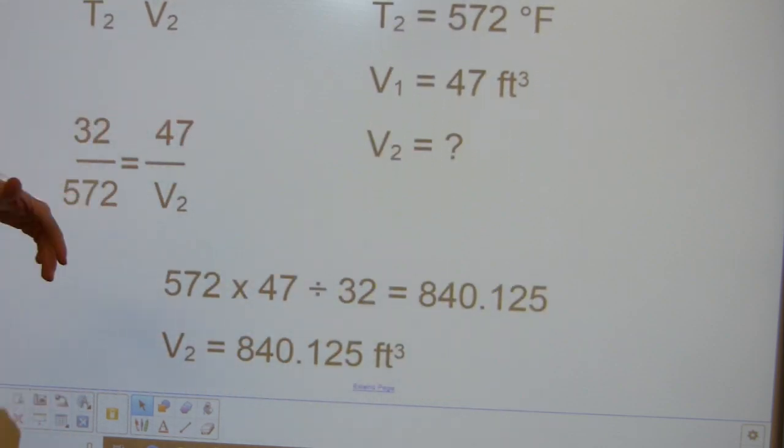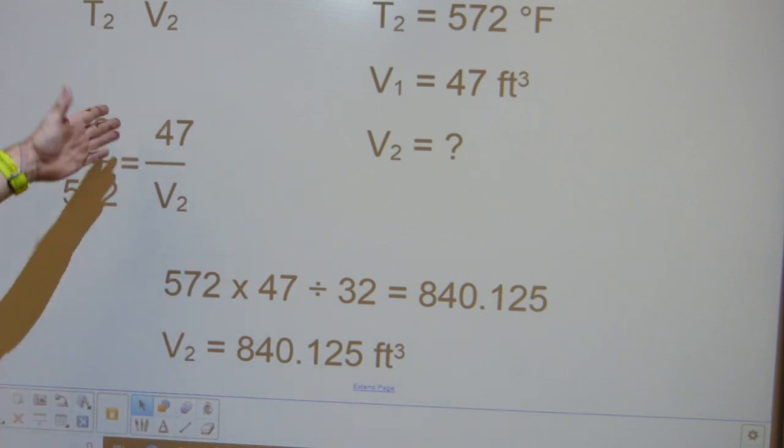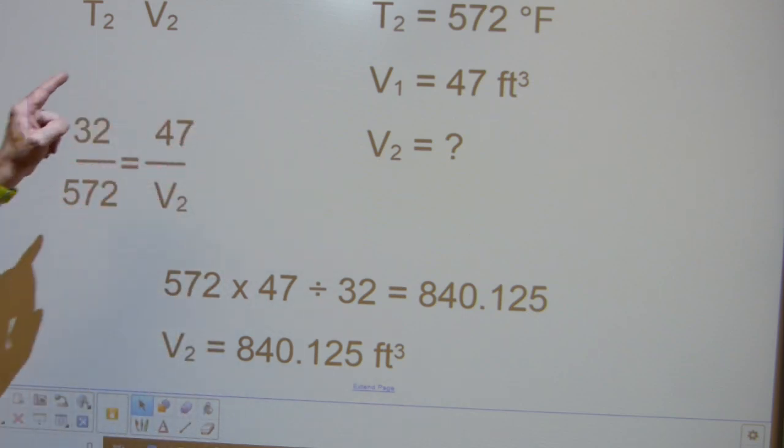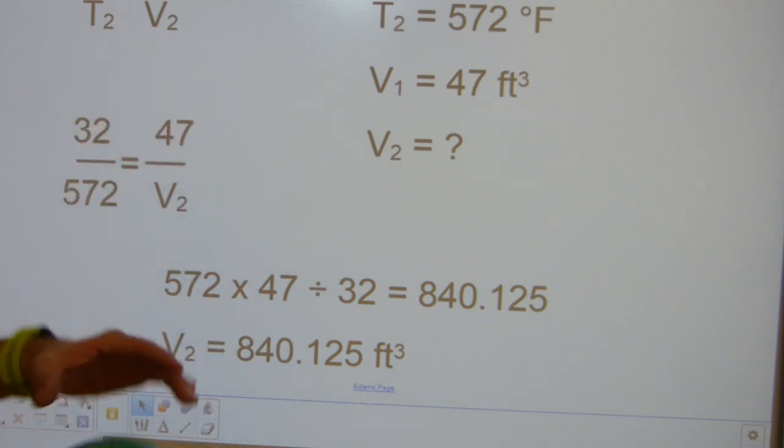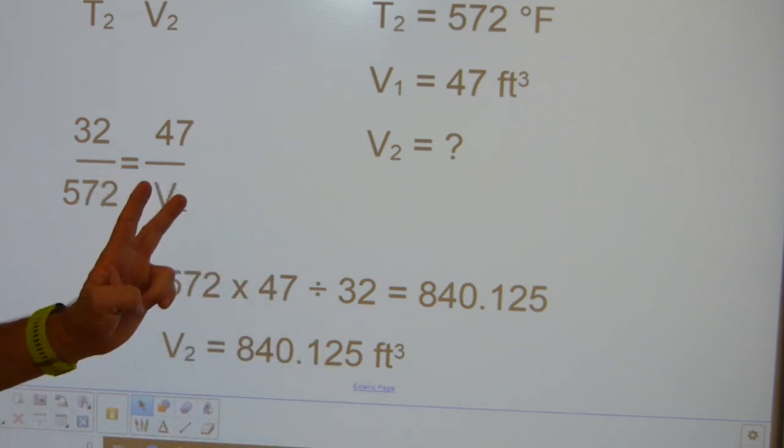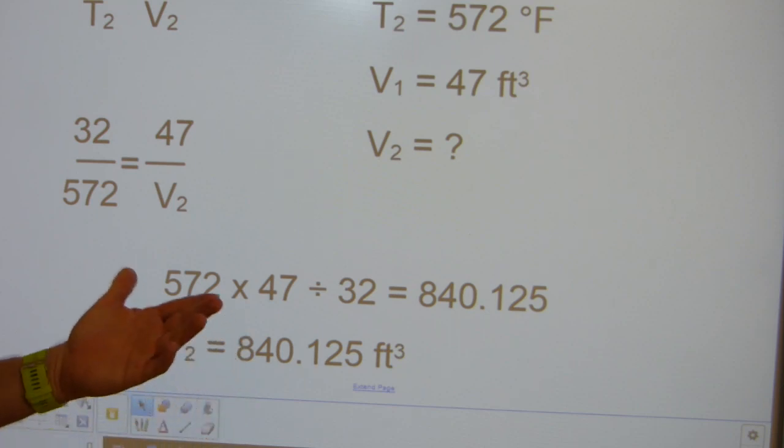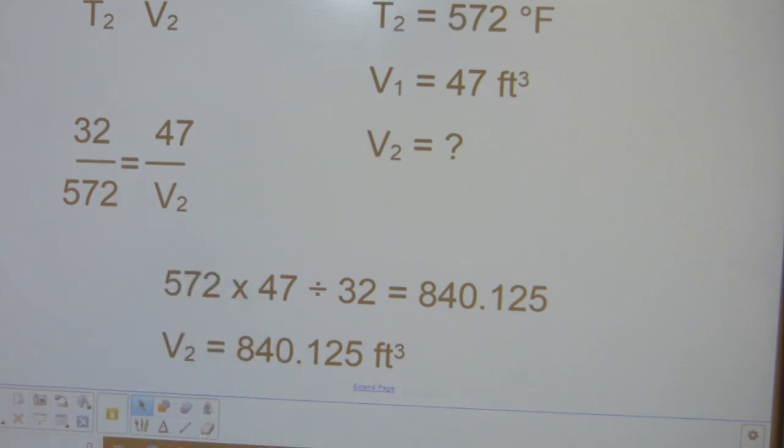You replace these four letters with the numbers given into equivalent fractions. To solve it, you cross-multiply and divide by the third number. Multiply the 47 and the 572 in any order you like, and divide it by the third number. On your answer line, 840.125, you can round it to 840, don't forget your unit of measure, cubic feet.